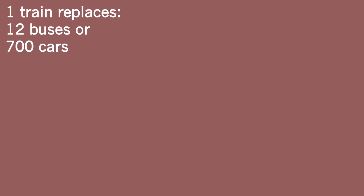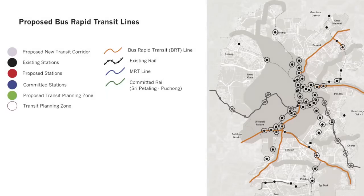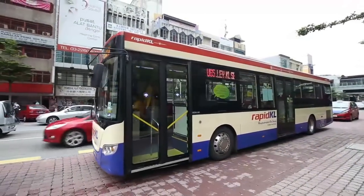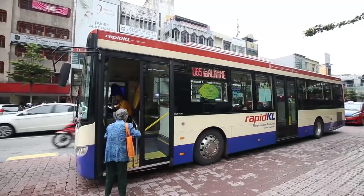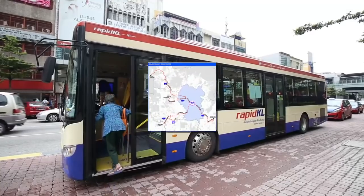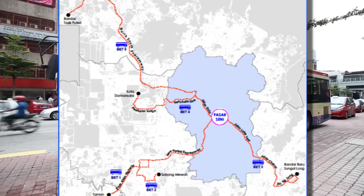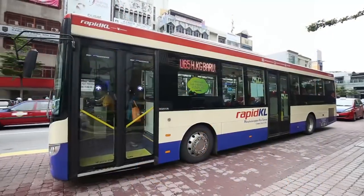A single train on the line with a maximum capacity of 1,200 passengers can replace 12 buses or approximately 700 cars. In addition to improving its rail-based public transport, KL is also increasing the share of public buses. Five bus express transit routes are currently in operation to reduce travel time from outer areas to the city centre. Moreover, a comprehensive bus rapid transit plan with dedicated bus lanes has also been proposed to make buses a fast and efficient mode of public transportation.